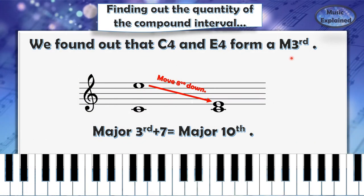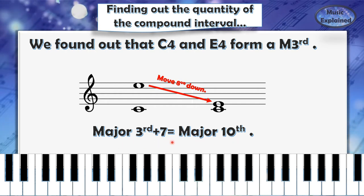A major third plus seven equals a major tenth. Every interval plus seven equals the corresponding compound interval.